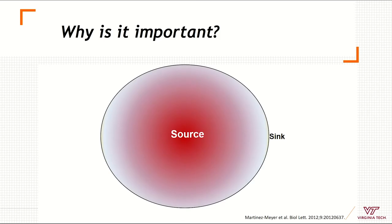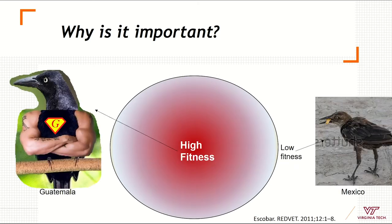Why is it important? Why should we care about the structure of the niche and its influence on the demographics of species? First, this can help us identify source species, expecting that source populations are going to be found in the center of the fundamental niche, and sink populations at the edges of the fundamental niche. We can also expect higher fitness in the center of the niche and lower fitness in populations at the edge.